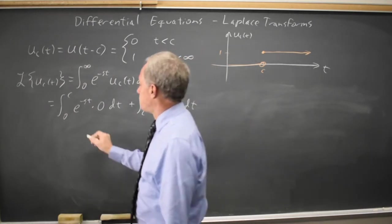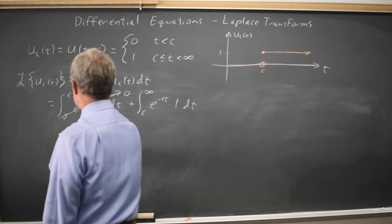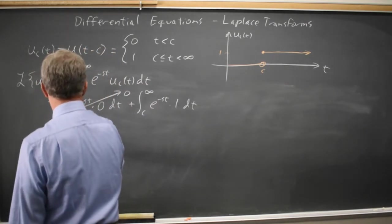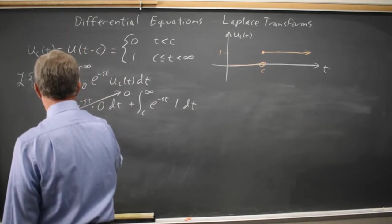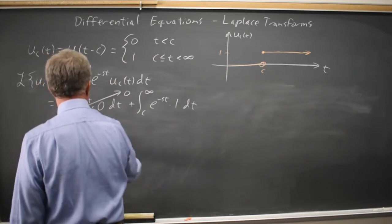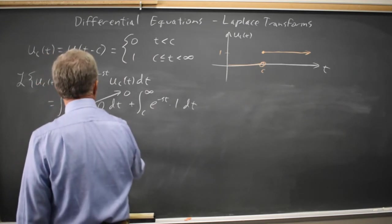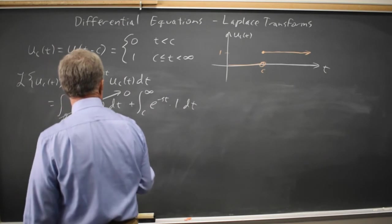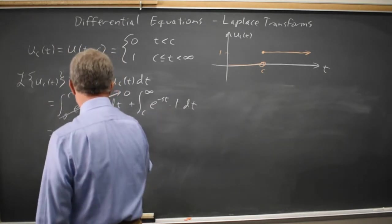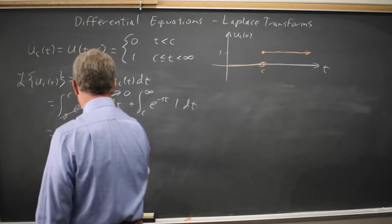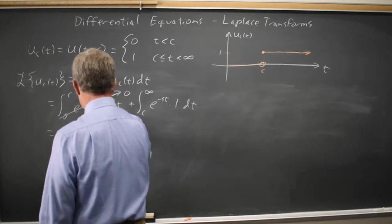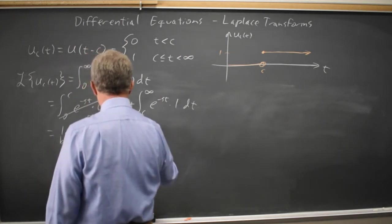Integral of zero is zero. So this is limit b goes to infinity, being formal about this, integral from c to b. And the integral of e to the negative st is negative one over s, e to the negative st, from c to b.